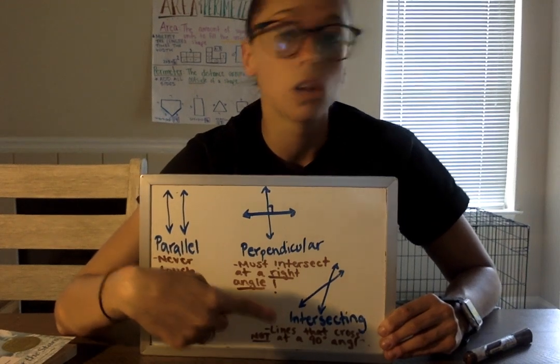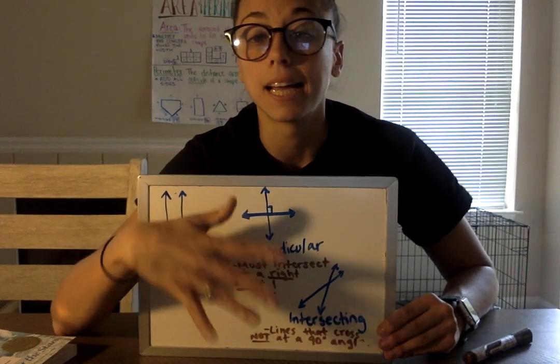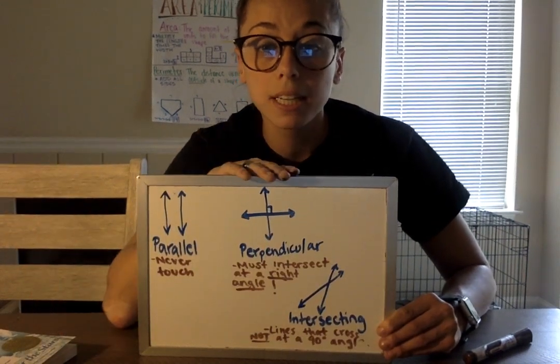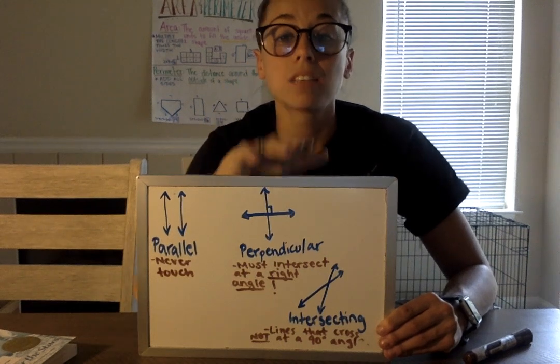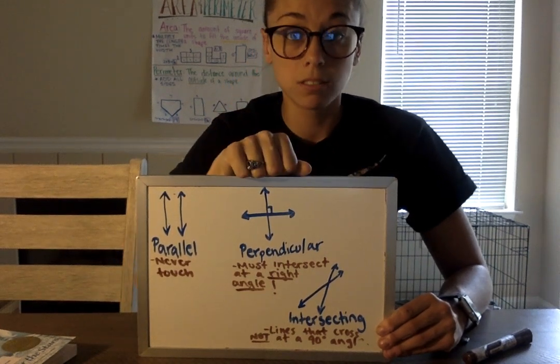Intersecting is all other lines that intersect at any other kind of angle. Perpendicular has to be 90 degrees.